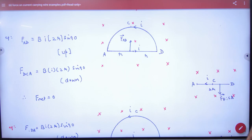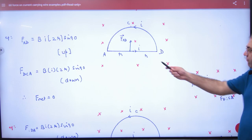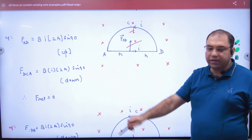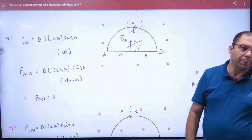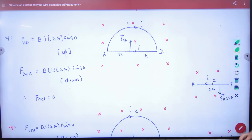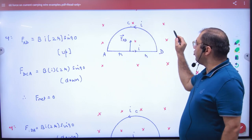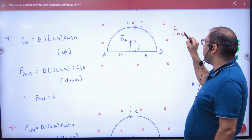B times I times 2R times sin 90, and the direction is out of the board. Now think about it: the force on AD is into the board, the force on DCA is out of the board, same magnitude, net force is zero.